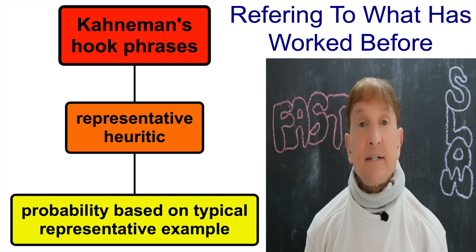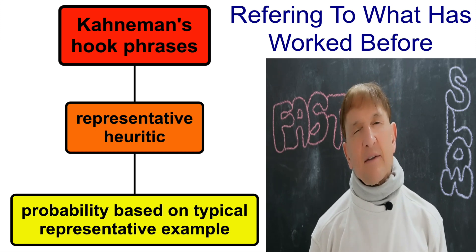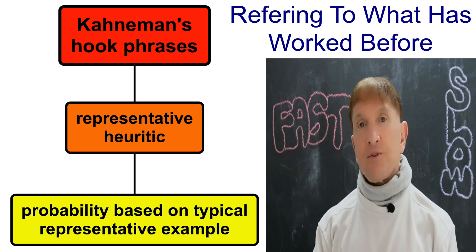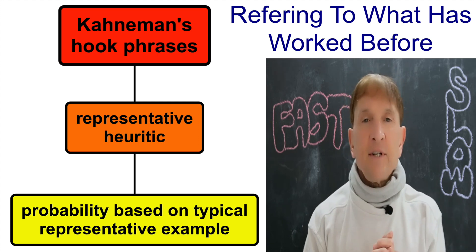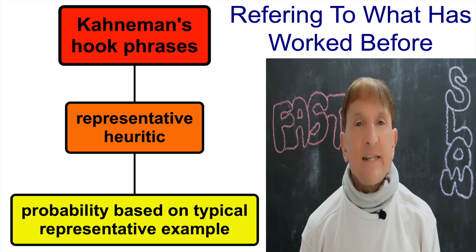A representativeness heuristic is where we draw on something that we've done before. It looks similar. And we choose to solve a problem, answer a question in a similar way. That can be very helpful. It can be misleading sometimes.